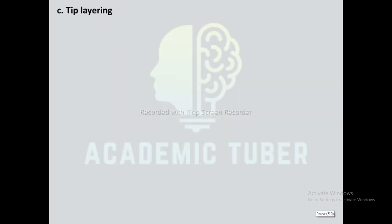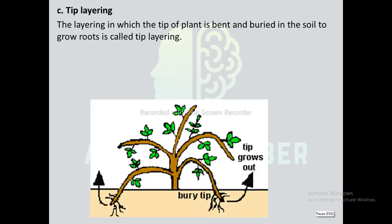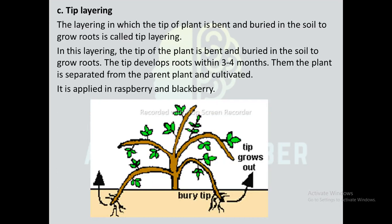Third is tip layering. The layering in which the tip of a plant is bent and buried in the soil to grow roots is called tip layering. The tip develops roots within 3 to 4 months, then the plant is separated from the parent plant and cultivated. It is applied in raspberry and blackberry.